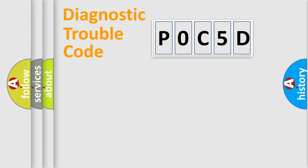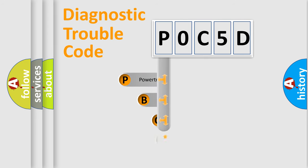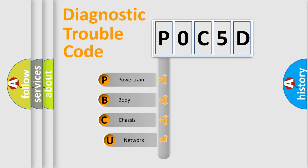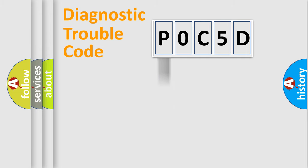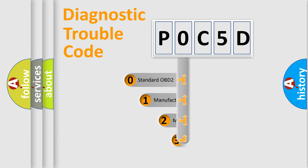Let's do this. First, let's look at the history of diagnostic fault code composition according to the OBD2 protocol, which is unified for all automakers since 2000. We divide the electric system of the automobile into four basic units: Powertrain, Body, Chassis, and Network. This distribution is defined in the first character of the code.